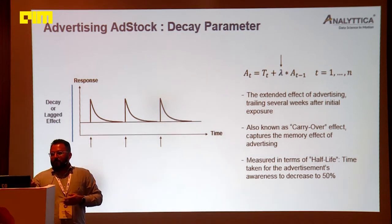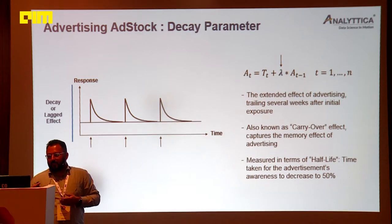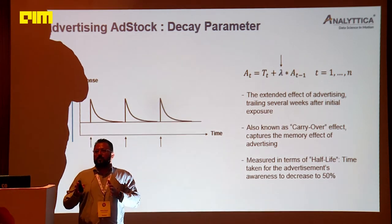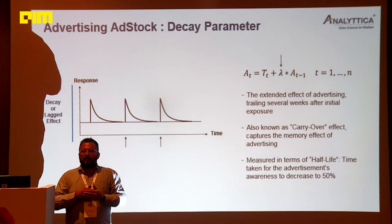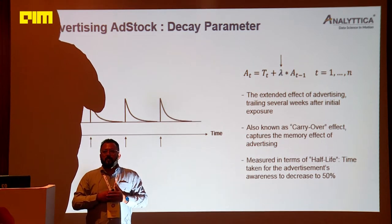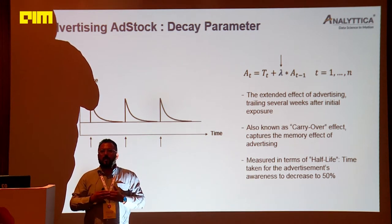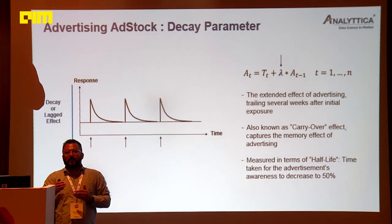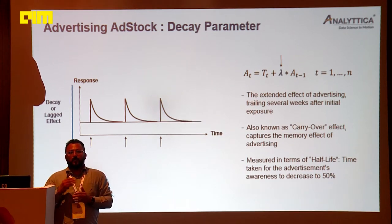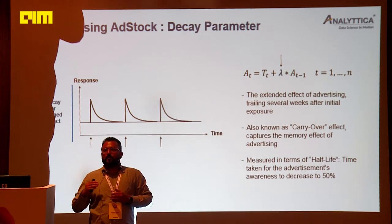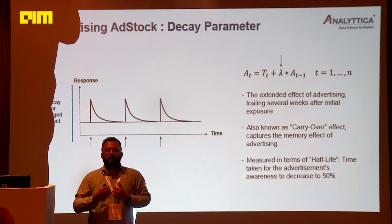From a mathematical standpoint, the ad stock at a given time, A(t), is a function of my spend at time t plus lambda times A(t-1), where A(t-1) is my ad stock at t minus 1. That time period can be a day, a week, a month, or a year depending on how we've structured our data. We need to understand not only how ad stock functions over time, but also what my lambda should be — it's very important that the slope of the decay curve is neither too fast nor too slow.